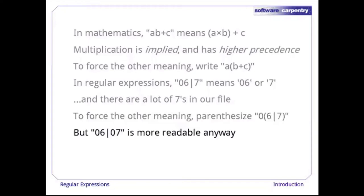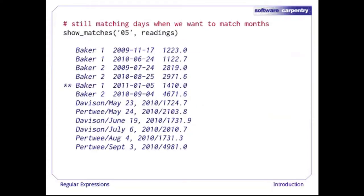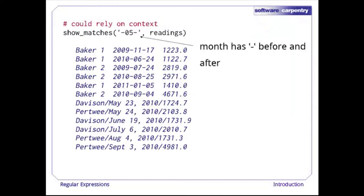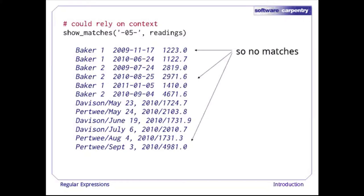The expression '06|07' is probably more readable to most people anyway. Going back to our function: if we do matches for '05', we're pulling up records that have '05' as the day rather than as the month. We can force our match to do the right thing by taking advantage of context. If we want to match a month, there should be a dash before and after the numbers. If we try to match '-05-', we show no matches, which is the correct answer — we don't have any readings from May.